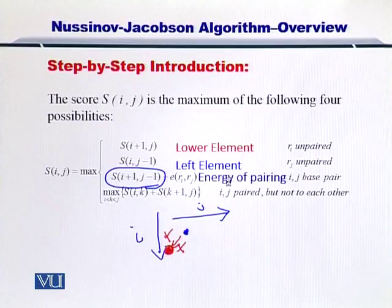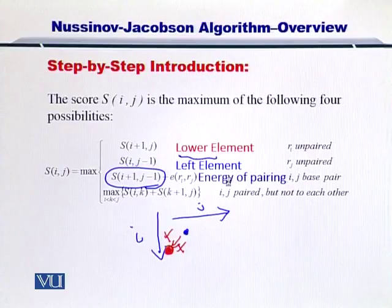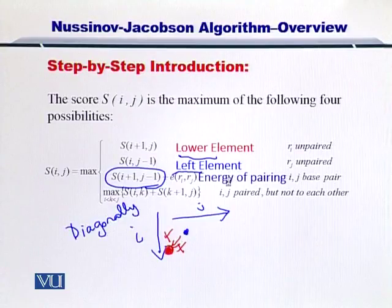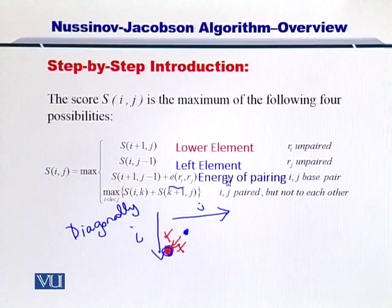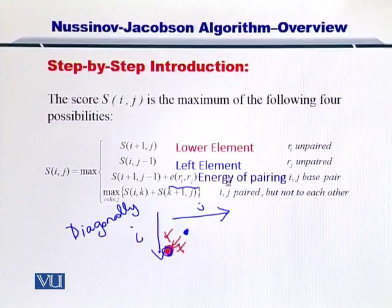So now we have three elements. One was the lower element. The second was the left element. And the third is the diagonally located element below the current position. What is this E? Let me clear it out for you. What is this energy of pairing?